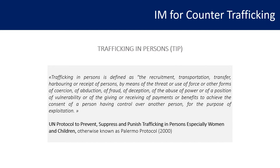According to this third article, trafficking in persons is defined as the recruitment, transportation, transfer, harbouring or receipt of persons by means of the threat or use of force or other forms of coercion, of abduction, of fraud, of deception, of the abuse of power or of a position of vulnerability, or of the giving or receiving of benefits to achieve the consent of a person having control over another person for the purpose of exploitation. This definition is pretty long and articulated, so now we're going to break it down and provide some practical examples.